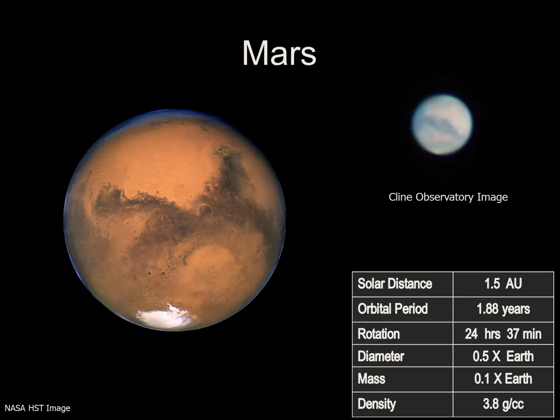Mars has significant temperature extremes as well. With an average of negative 60 degrees Celsius — that's minus 81 Fahrenheit — wintertime temperatures at the poles may drop as low as negative 195. On the other hand, summertime in the tropics can rise to a quite pleasant 70 degrees Fahrenheit.